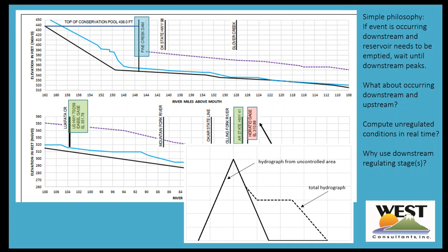If you have events occurring both upstream and downstream simultaneously, you pick the worst case of those two scenarios and have that govern what your releases are going to be. In reality, if I want to make certain I'm not making anything worse than what would have occurred had the dam not been in place, I could compute the unregulated or no-dam conditions in real time and then make those determinations.